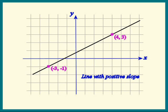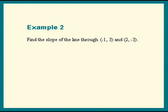In the next example, we'll see a line with a negative slope. Instead of rising, the line will be falling. We'll find the slope of the line through (-1, 3) and (2, -3).